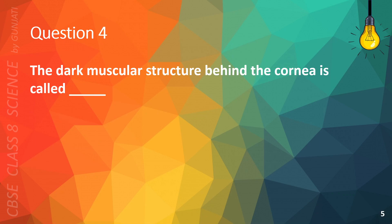Question 4. The dark muscular structure behind the cornea is called A. Iris, B. Retina, C. Blindspot, or D. Pupil. The correct answer is A. Iris.